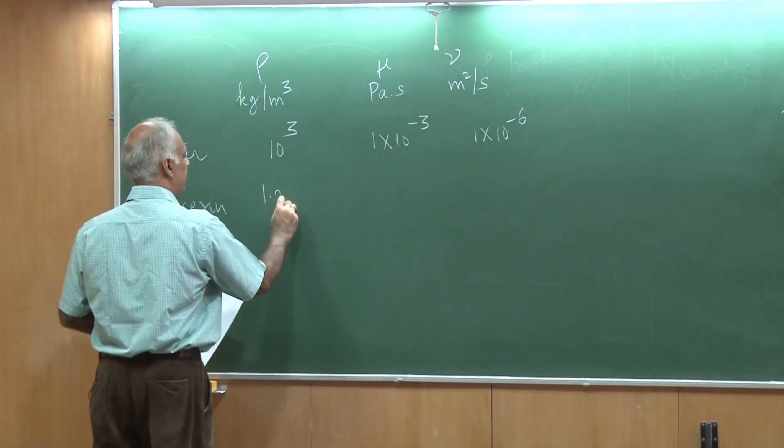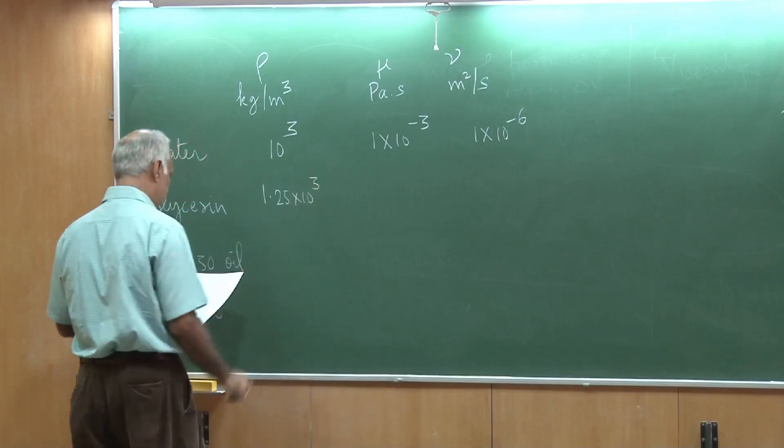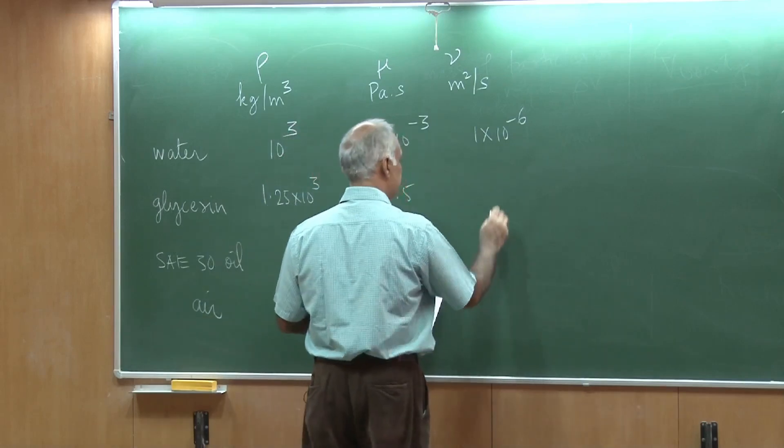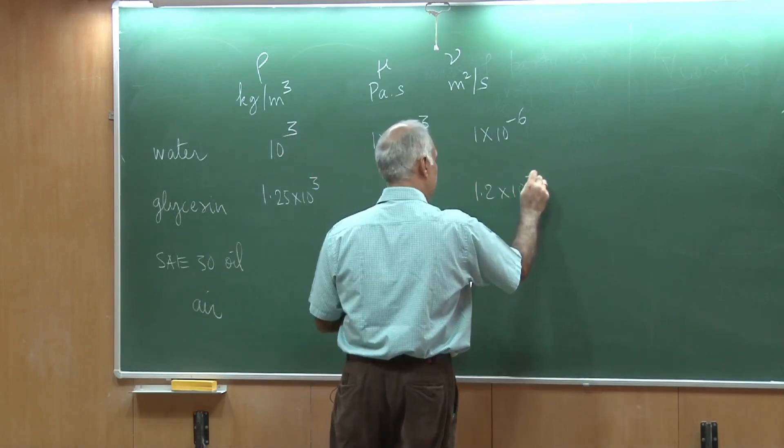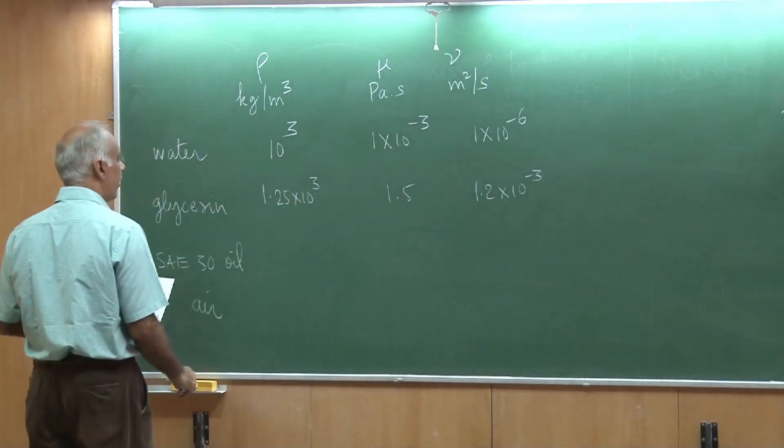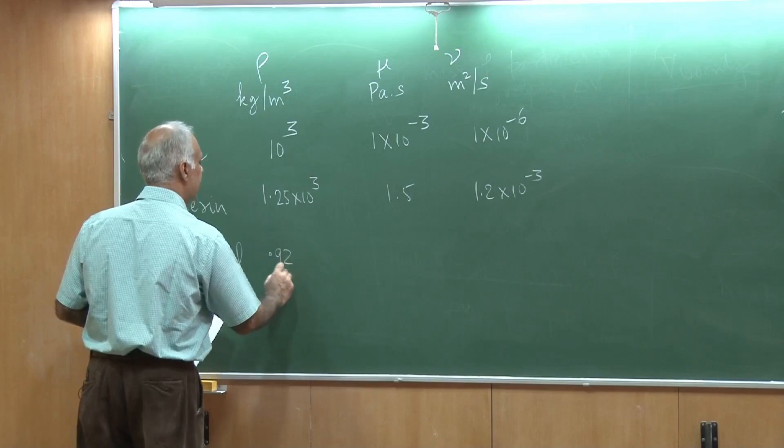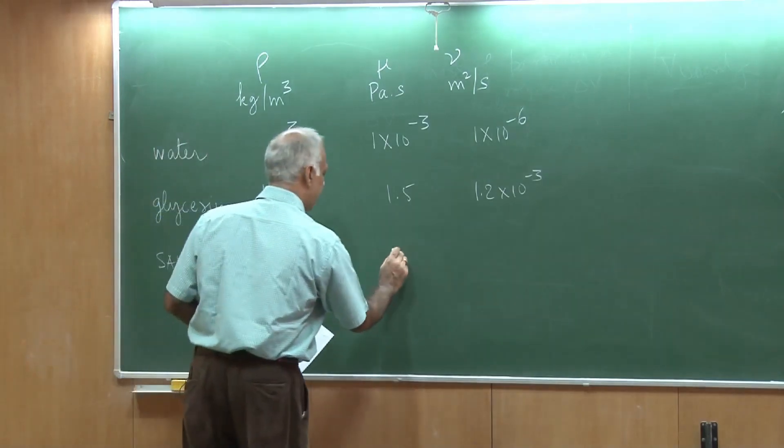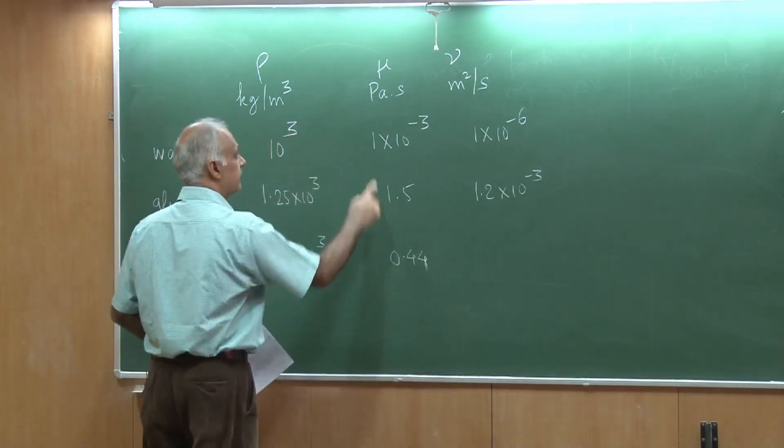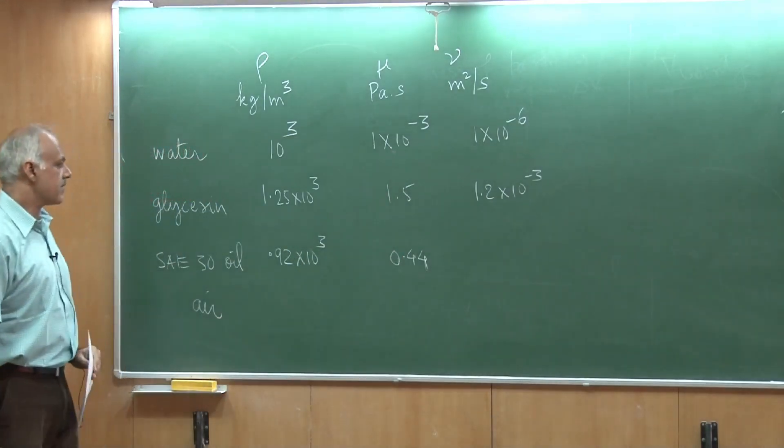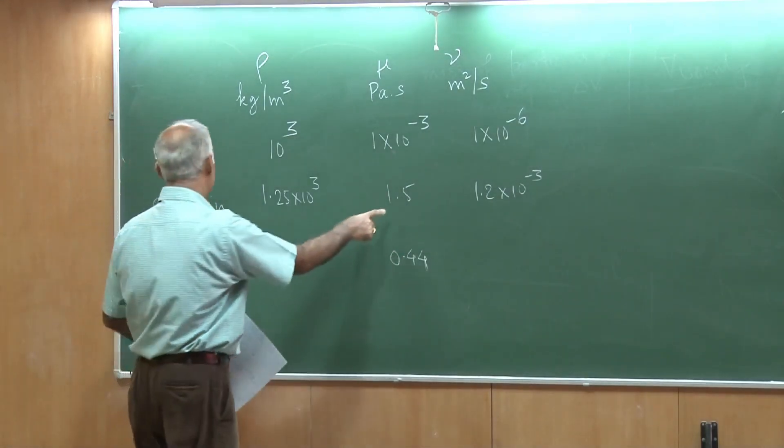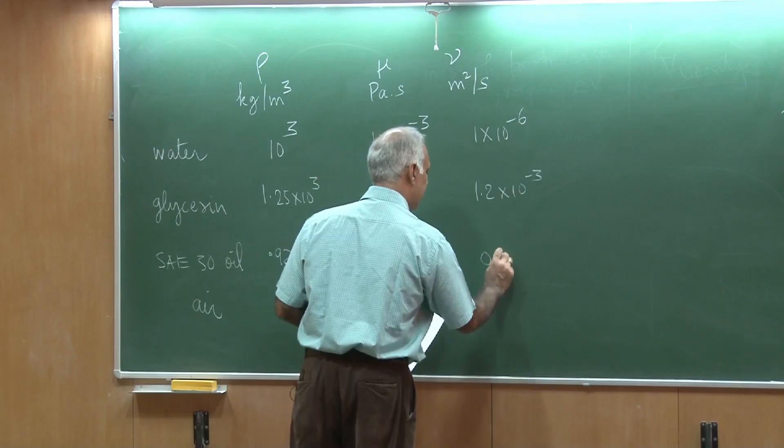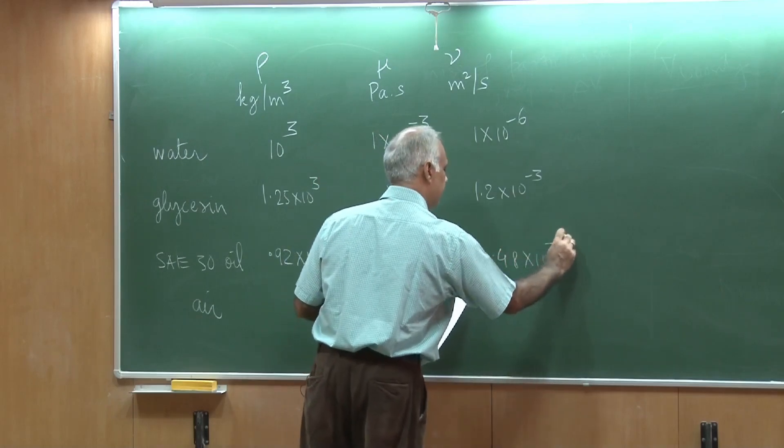For glycerin, it is 1.25 into 10 to the 3rd. This is 1.5 and this is 1.2 into 10 to the minus 3. SAE oil, it is slightly lighter than water, as we all know. But look at the viscosity. It is far more viscous than water, but less viscous than glycerin. But if you look at the value of nu, that would be something like 0.48 into 10 to the minus 3.